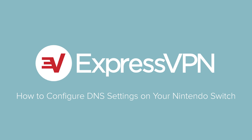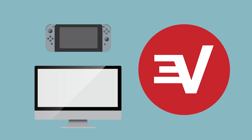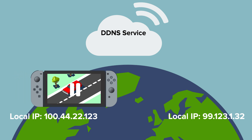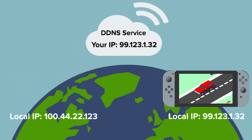Let's walk through the steps for configuring DNS settings on your Nintendo Switch. To complete this tutorial, you'll need a computer, a Nintendo Switch, and an ExpressVPN subscription. Note that changing DNS settings can enhance your streaming experience, but won't offer you the full privacy protection of a VPN.